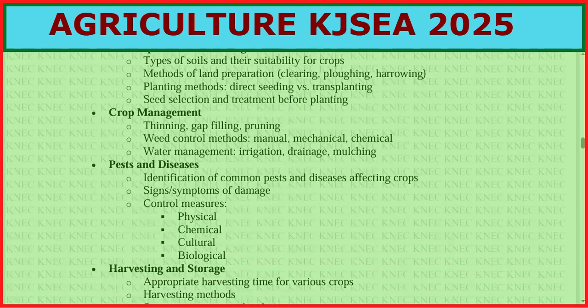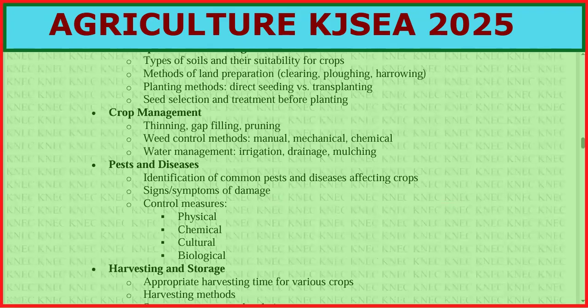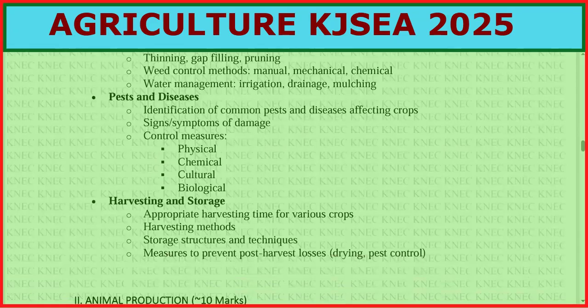In pest and disease control, focus on identification of common pests and diseases affecting crops, signs and symptoms of damage, and control measures: physical, chemical, cultural, and biological. For harvesting, look at appropriate harvesting time for various crops, harvesting methods, storage structures and techniques, and measures to prevent post-harvest losses such as drying and pest control.